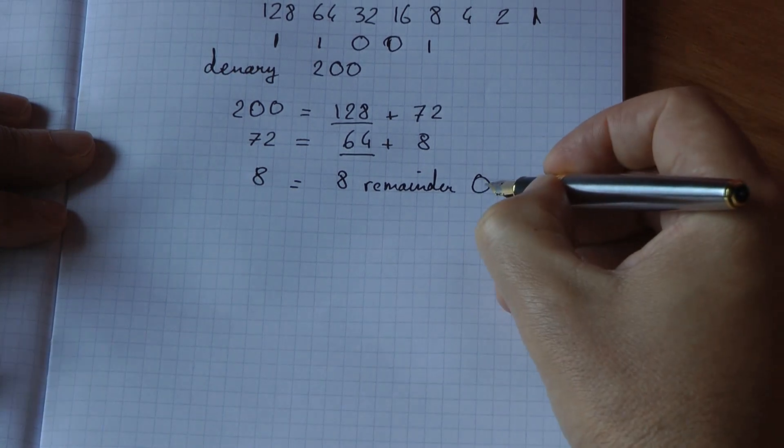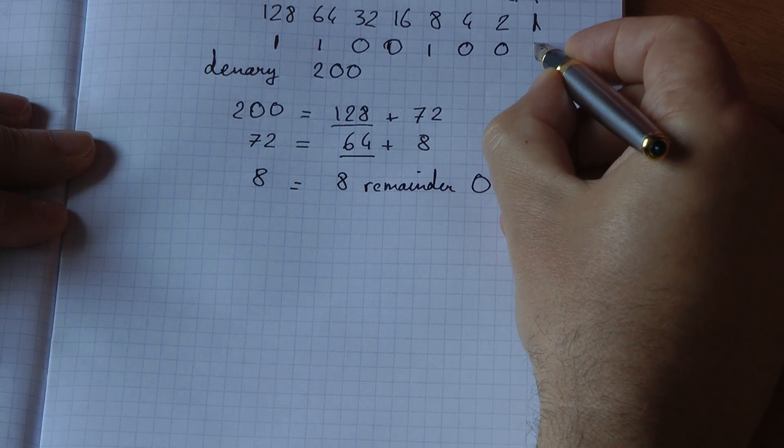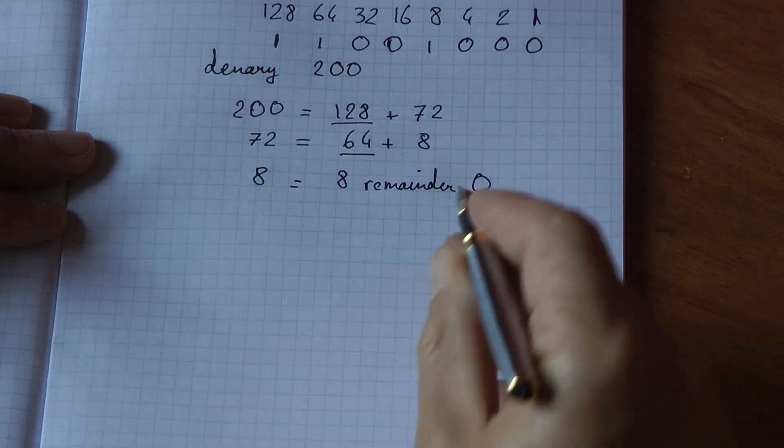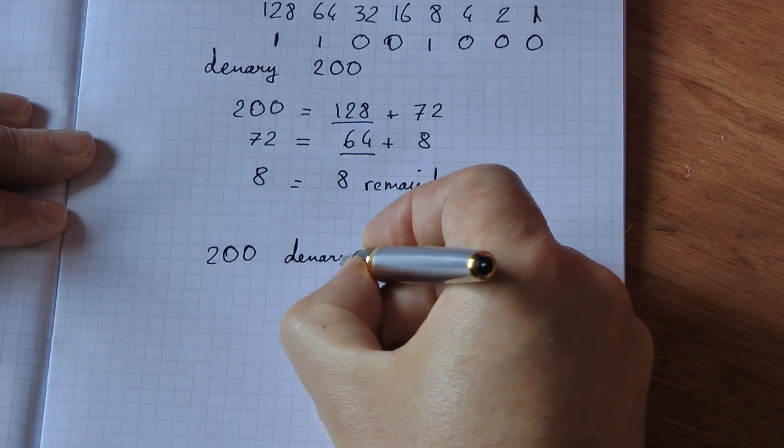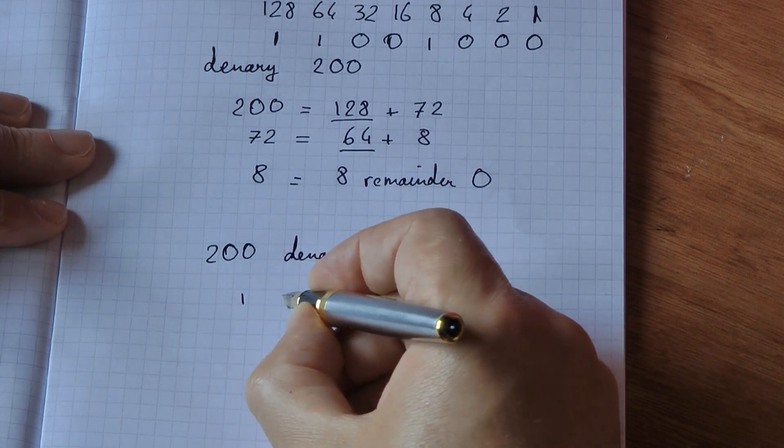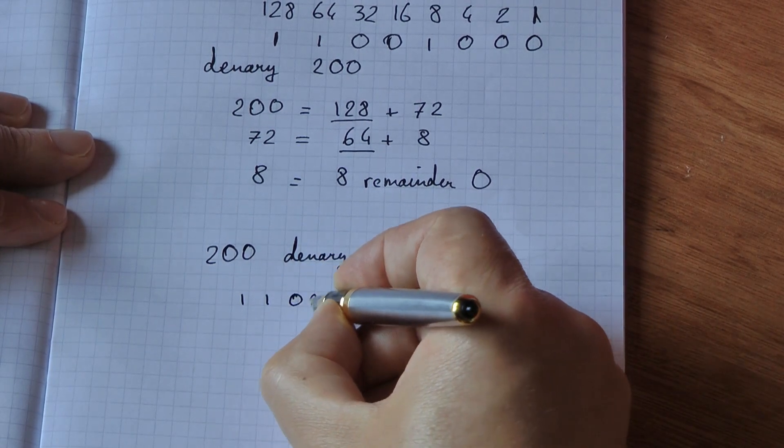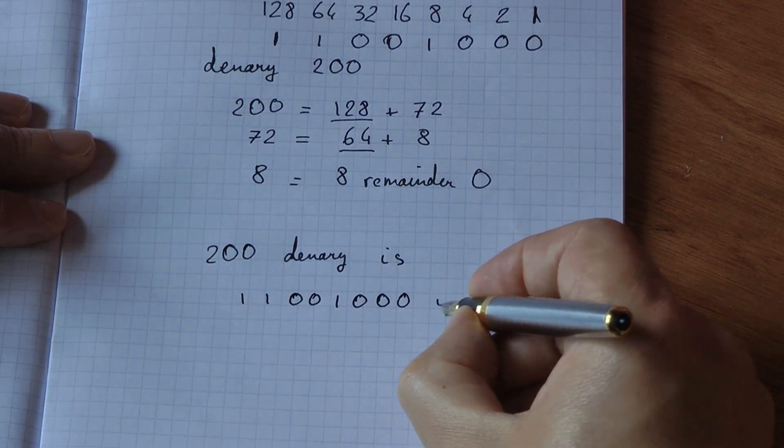So I've got nothing left. I can set all those remaining bits to 0. So 200 as a binary number is 1, 1, 0, 0, 1, 0, 0, 0 in binary.